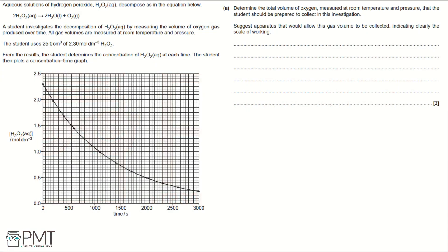Aqueous solutions of hydrogen peroxide, H2O2 aqueous, decompose as in the equation below. A student investigates the decomposition of H2O2 aqueous by measuring the volume of oxygen gas produced over time. All gas volumes are measured at room temperature and pressure. The student uses 25 cm³ of 2.30 mol dm⁻³ H2O2.